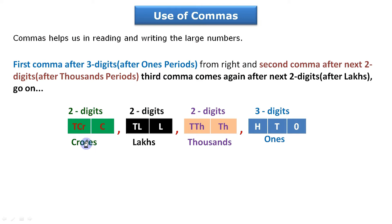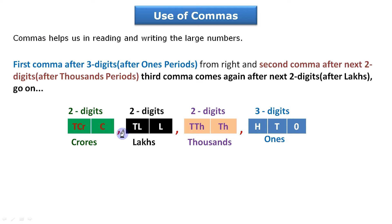Observing the diagram, we notice one important thing: the first comma is after three digits, then all remaining commas are after every two digits. See here — one, two, then second comma; again leaving two digits, one, two, then the third comma; and similarly the fourth comma after two more digits.